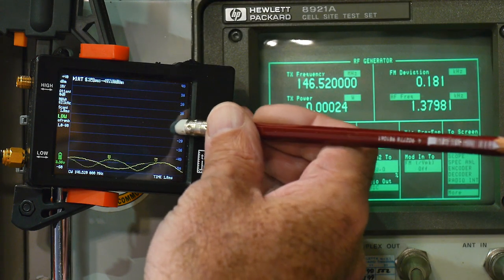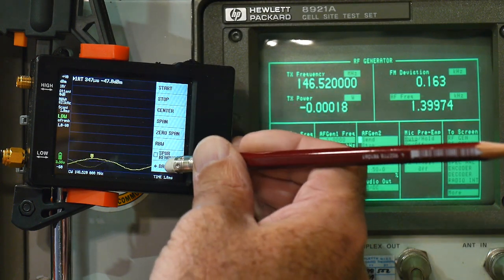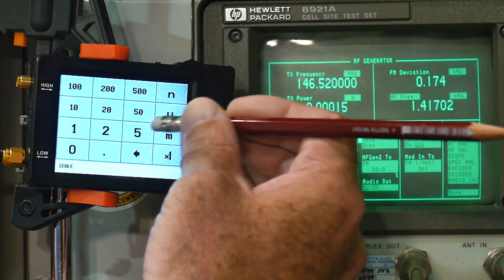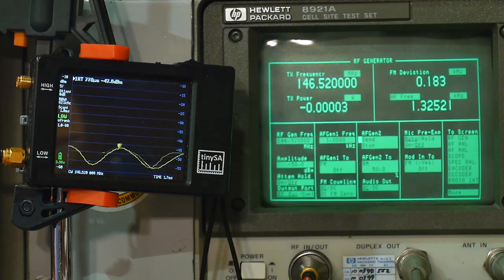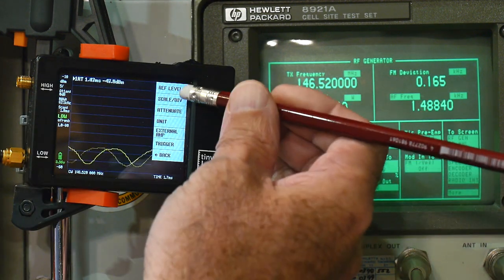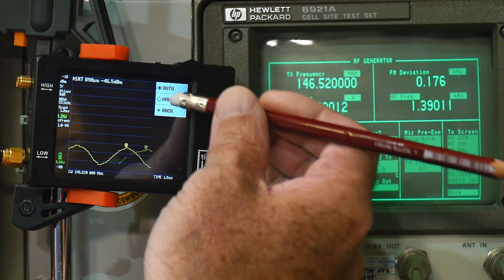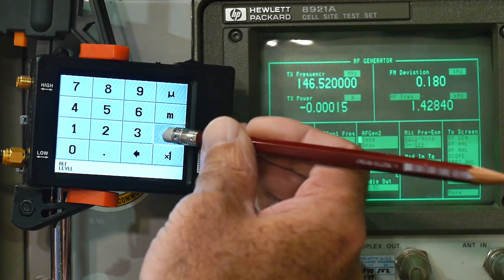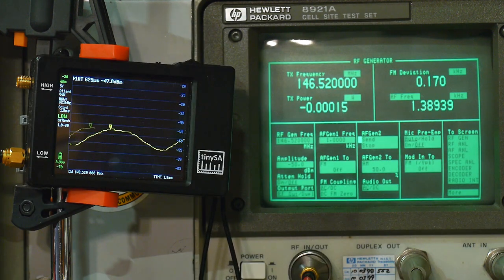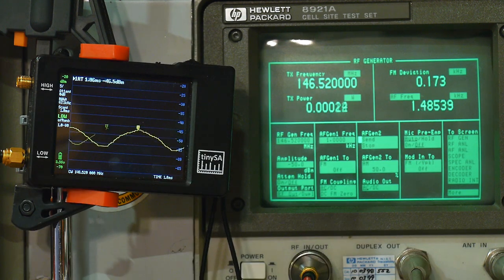We want to first change the level. We're going to change the scale per division to 5. So now it's bigger. We want to move it up, so we change the reference level to minus 20.